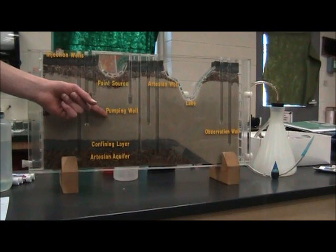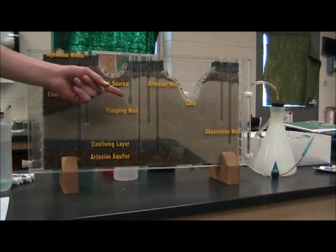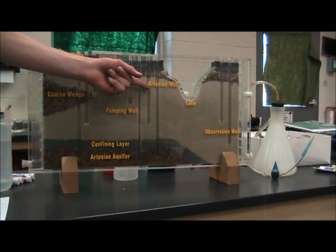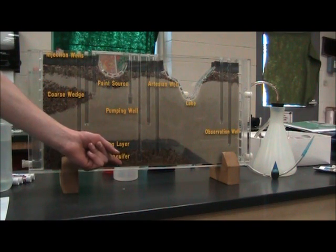A pumping well requires a pump to bring water to the surface. An artesian well does not require a pump and goes into the artesian aquifer layer.